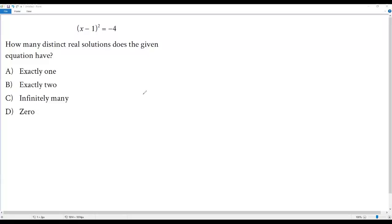So we have to find the number of distinct real solutions we have for the given equation. I think the given equation can be solved easily because here we have (x - 1)² = -4.